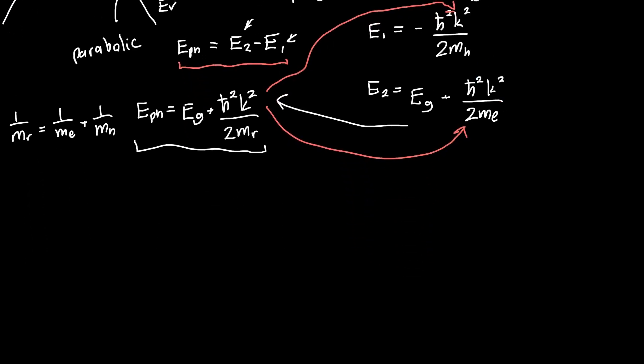Now we have E2 as a function of photon energy will be equal to our bandgap plus (Ephoton - Eg) times the reduced mass over the electron mass. Similarly, E1 as a function of the photon energy is just negative (Ephoton - Eg) times the reduced mass over the hole mass.